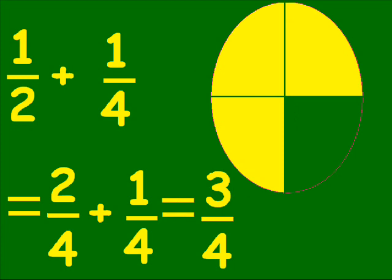One half plus one quarter equals two quarters plus a quarter. And that equals three quarters. So three quarters of the cake has been eaten.